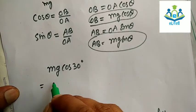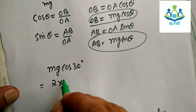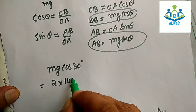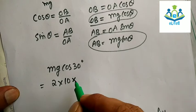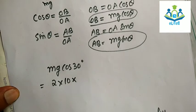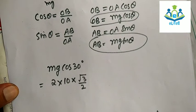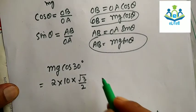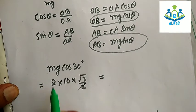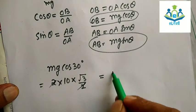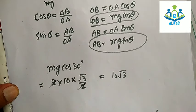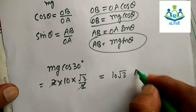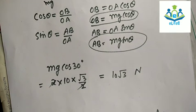So m is 2 kg, g is approximately 10, and cos 30 equals √3/2. The perpendicular component of weight equals 2 × 10 × √3/2 = 10√3 Newton. The SI unit of weight is Newton. So we have found the component of weight perpendicular to the plane.